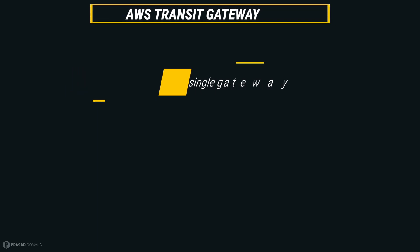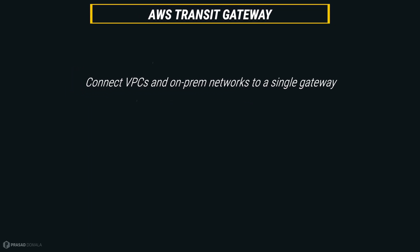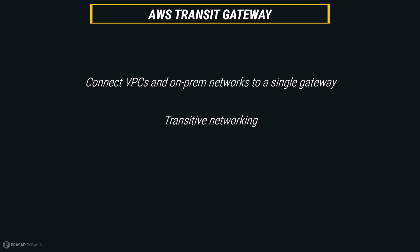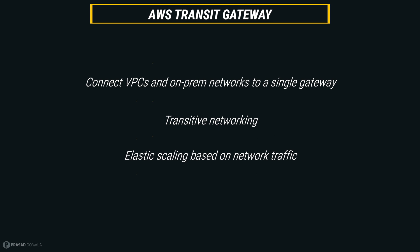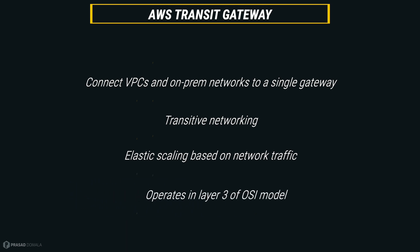So what is the Transit Gateway? It is a service from AWS which enables us to connect multiple VPCs and on-prem networks to a single gateway and set up transitive networking across these attached networks. It scales elastically based on the volume of network traffic, and it operates in layer 3 of the OSI model, meaning all packets are sent to the next hop based on their IP addresses.